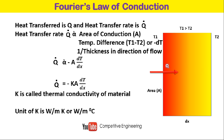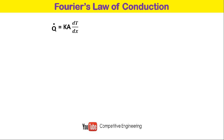The unit of thermal conductivity is watt per meter kelvin, or watt per meter degree Celsius. We can also write Q dot equals K times A times dT/dx, and Q dot divided by A — the heat transfer rate per unit area — is called heat flux, denoted by small q dot, equal to K times dT/dx.